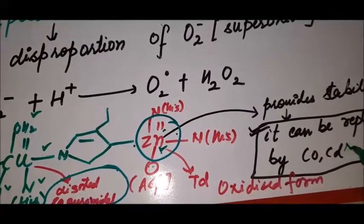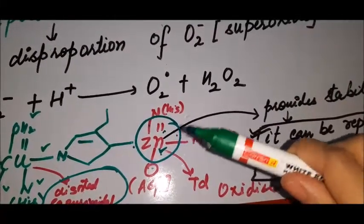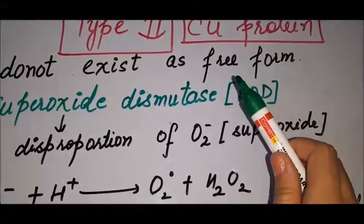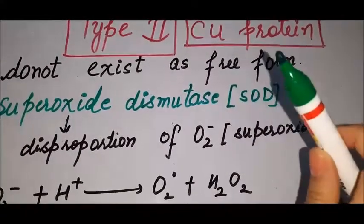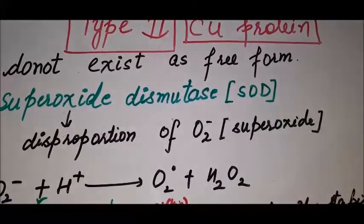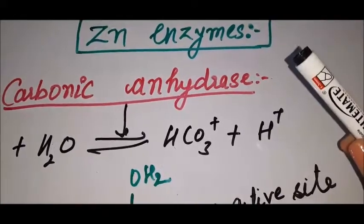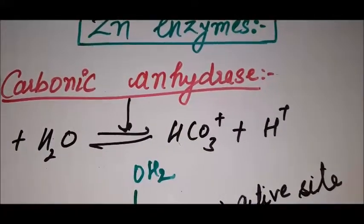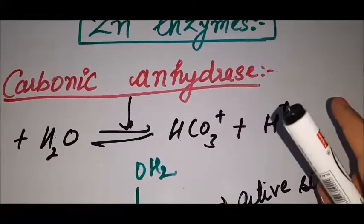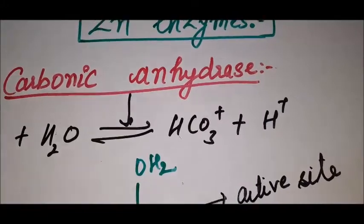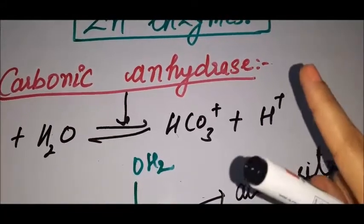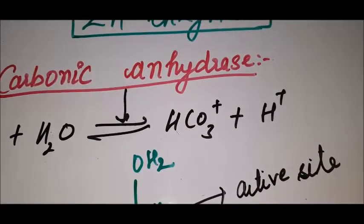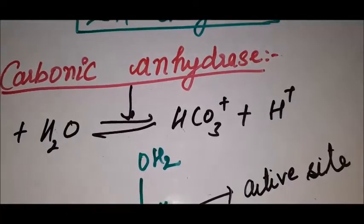So this covers type 2 copper protein. The third type is hemocyanin, and the first type has already been completed. Next we will start with zinc enzymes. Zinc as a metal center is a small topic but more than one question can come from it. The main function and active site are important.